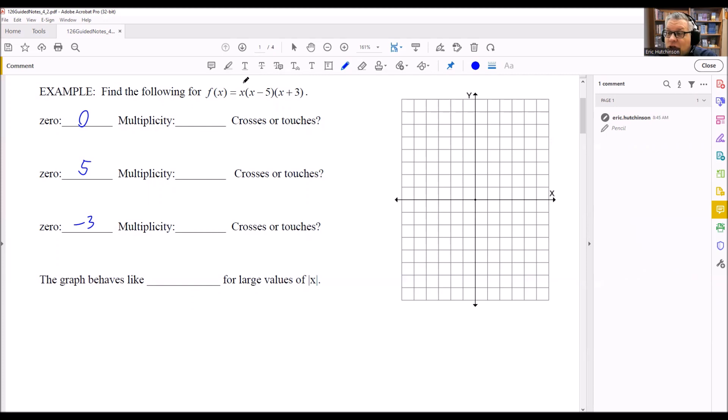Now the multiplicity are the powers that are attached to each of these factored pieces. So in this case, all of these are raised to the power of one, which means that for each of these, the multiplicity is one.